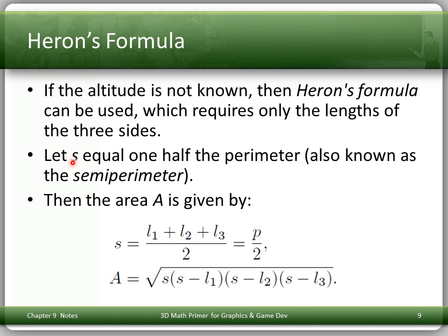Let s equal one-half the perimeter, also known as the semi-perimeter. The semi-perimeter s equals L1 plus L2 plus L3 over 2, which equals P over 2. The area is then the square root of s times (s minus L1) times (s minus L2) times (s minus L3).